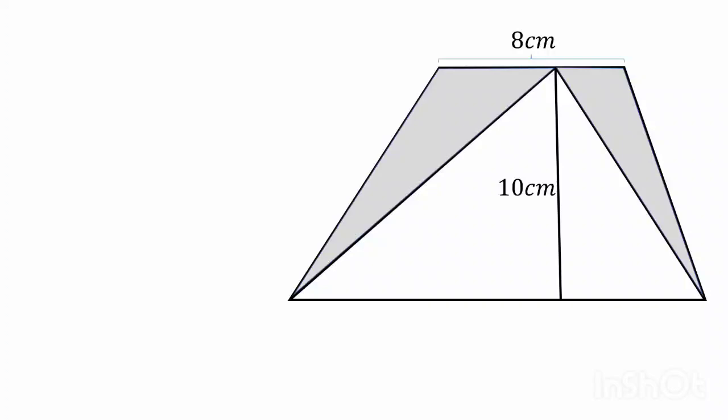In this question the height of this trapezium is given which is 10 centimeters and one side of this trapezium is given which is 8 centimeters and we have to find this shaded area which is the area of two triangles.